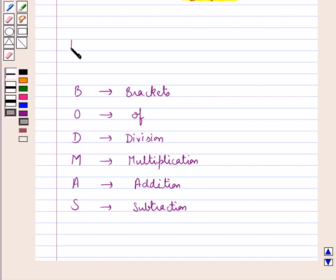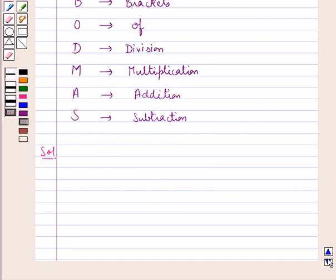This is the key idea that we use for this question. Now we move on to the solution. We need to simplify the algebraic expression 15x plus 9x within parenthesis divided by 6 minus 1 upon 2 of 18x.